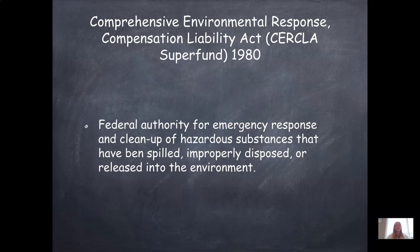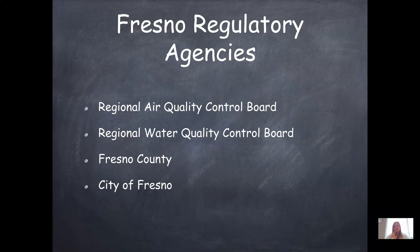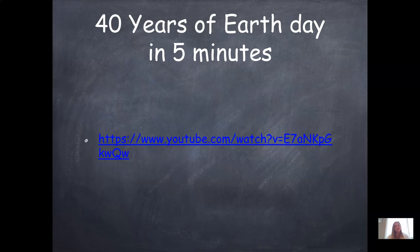In California, many different agencies regulate different aspects of the environment — links are available on the PowerPoint slides if you'd like to explore them. In the Fresno area, the big ones are the Regional Air Quality Control Board, the Regional Water Quality Control Board, Fresno County, and the City of Fresno — all of which regulate projects and hold them to a specific environmental standard. If you want to see 40 years of Earth Day in five minutes, there's a video link on the PowerPoint on Canvas. That's it for environmental policy — I'll see you in the next one!